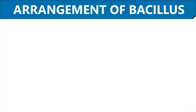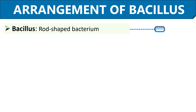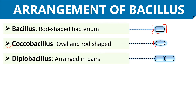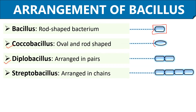Now let us learn the different arrangements of bacillus cells. Bacillus is a rod-shaped bacterium where cell division occurs in only one plane. Depending upon the cell number and arrangement, bacilli exist in various forms. First is Coccobacillus, where the cell is slightly oval on the edges but has a rod shape. Second is Diplobacillus, where the cells are arranged in pairs. Third is Streptobacillus, where the cells have a rod shape and are arranged in the form of a long chain.